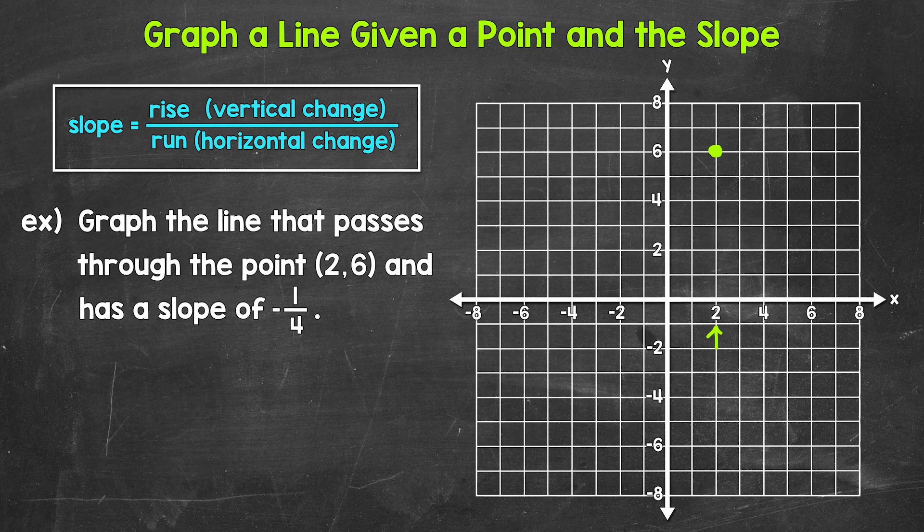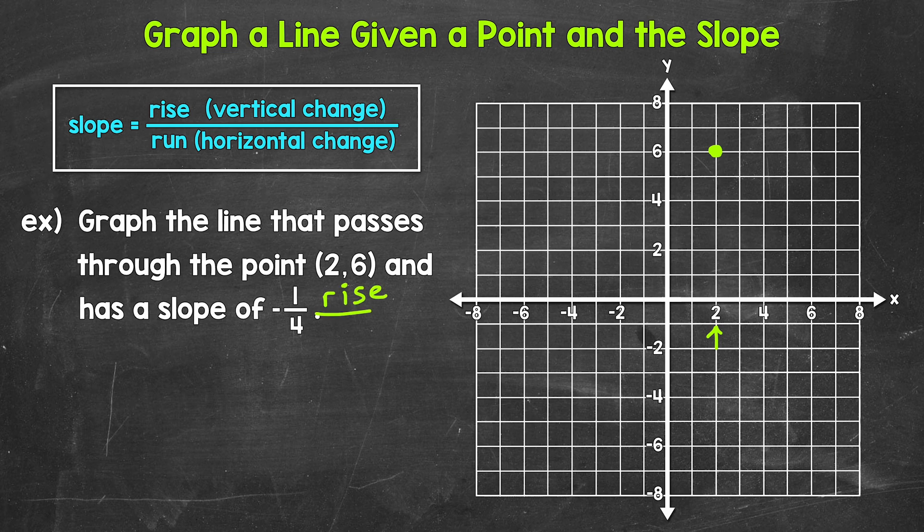This point at (2, 6) is going to be our starting point. So moving on to our second step, we use the slope to plot a second point from that point of (2, 6). The slope here, again, is negative 1/4. And remember, for slope, it's rise over run - so vertical change over horizontal change.